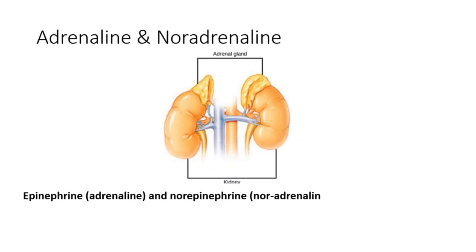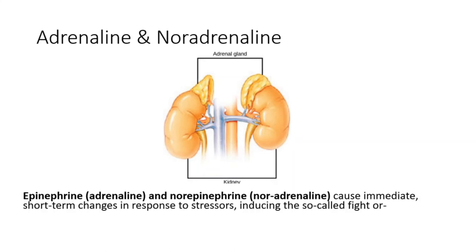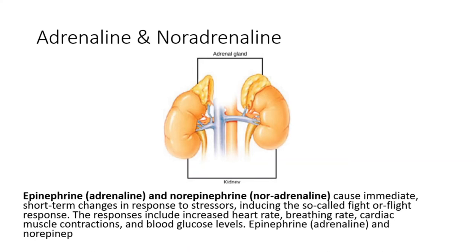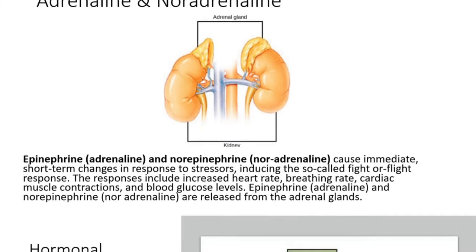Epinephrine (adrenaline) and norepinephrine (noradrenaline) cause immediate, short-term changes in response to stressors, inducing the so-called fight-or-flight response. The responses include increased heart rate, breathing rate, cardiac muscle contractions, and blood glucose levels. Epinephrine and norepinephrine are released from the adrenal glands.